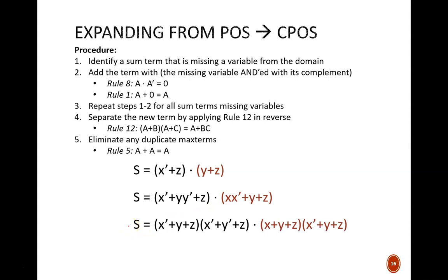Next, we separate the new sum terms. By rule 12, this first term will split into two, one with y and one with y'. Similarly, the second term will split into two, one with x and one with x'. Finally, we see four max terms all being ANDed together, and we scan through for any duplicates. X' or y or z appears twice, so we eliminate one of them, which leaves us with the final canonical POS representation.